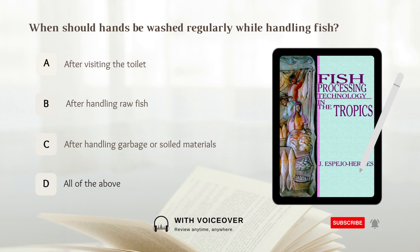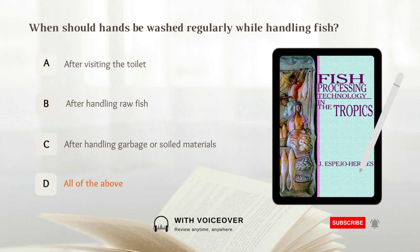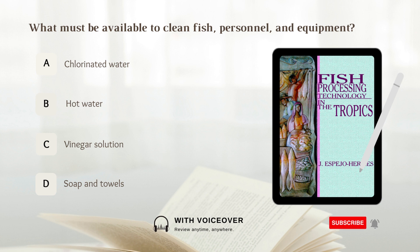When should hands be washed regularly while handling fish? A. After visiting the toilet. B. After handling raw fish. C. After handling garbage or soiled materials. D. All of the above. Answer: D. All of the above. What must be available to clean fish, personnel, and equipment? A. Chlorinated water. B. Hot water. C. Vinegar solution. D. Soap and towels. Answer: A. Chlorinated water.